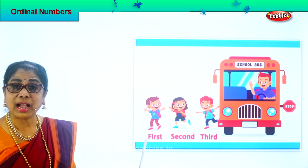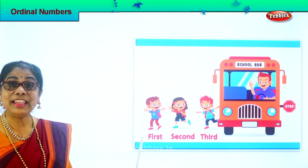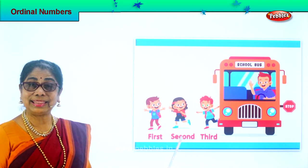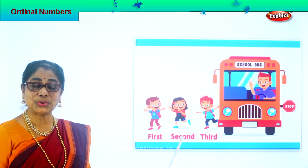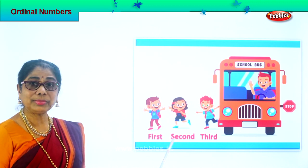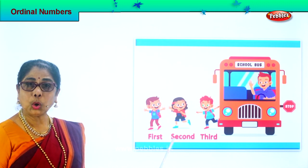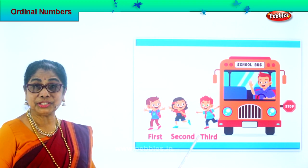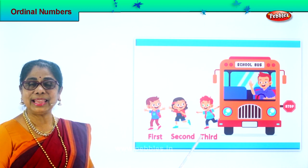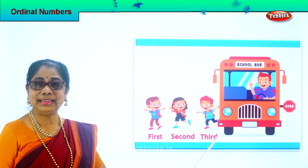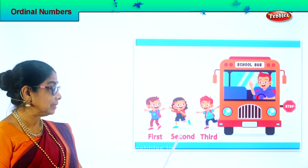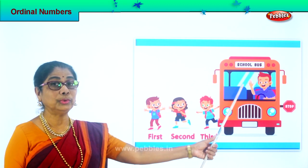Spell first: F-I-R-S-T. First. The little girl says, I'm second. I came out second from the school bus. Spell second: S-E-C-O-N-D. Second. And the little boy says, I'm third. Spell third: T-H-I-R-D. Third. So these are ordinal numbers — first, second, third, and it goes on.